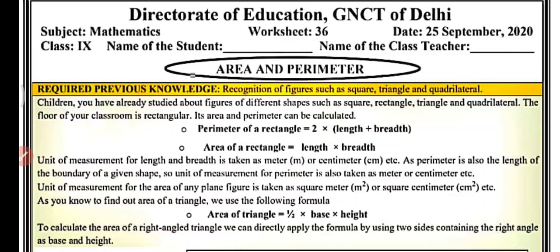So first of all, let's talk about perimeter. The total length of the boundary of any particular shape is known as the perimeter of that particular shape. And what is area? The region enclosed by the boundary of that shape is known as the area of that shape. So we have discussed the basics of area and perimeter.